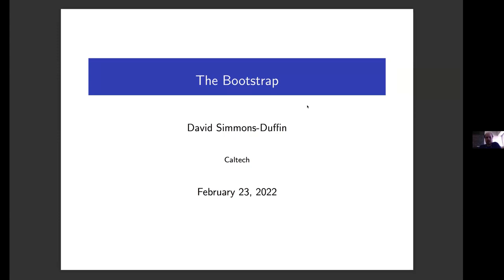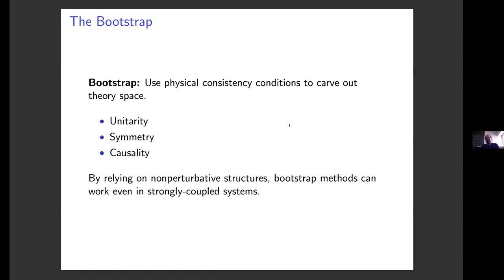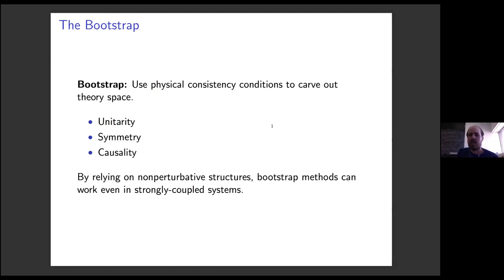So I'm talking about the bootstrap. The bootstrap is the general idea of using physical consistency conditions to constrain and potentially solve theories. In practice, this works by carving out theory space, showing which hypothetical theories are actually inconsistent and which ones can possibly be consistent. In ideal situations, you carve out enough of theory space to isolate interesting observables.